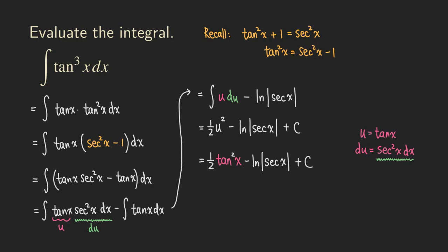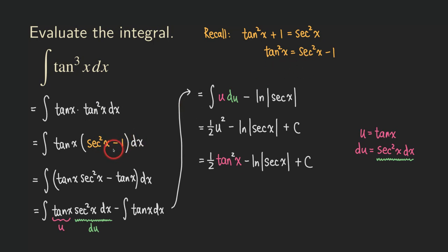Going back to the beginning of the problem, at the start we had no idea why we were doing this. But sometimes when you're doing integration, you have to try things. By splitting the power into the first power and the second power, we could use the Pythagorean identity to convert the tangent square into an expression involving secant square, and then do more work from there. Just working with tangent cube directly is more difficult, even though this expression looks more complicated — it's actually easier, as you can see.